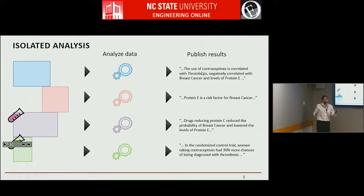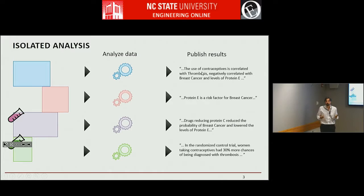Usually what people do in 99.9% of standard machine learning and data mining is to analyze them independently. The first doctor would analyze the data and try to find risk factors associated with breast cancer. The second biologist will find molecular quantities associated with breast cancer. The experimental data will perhaps find causes of breast cancer. These results are published in the literature, and then it's the human expert who reads these papers and tries to figure out what is happening.